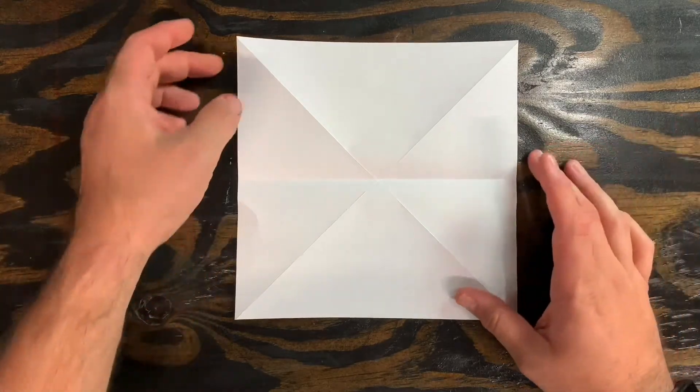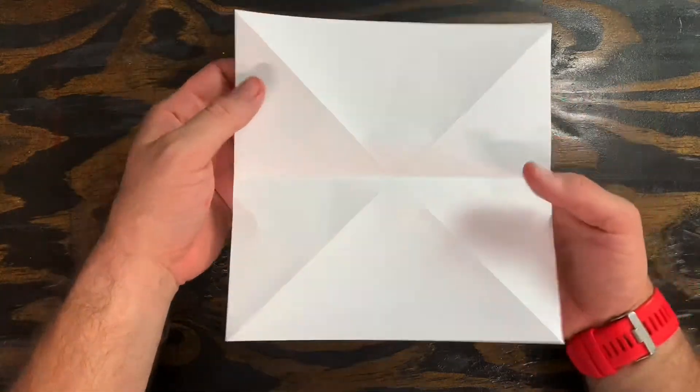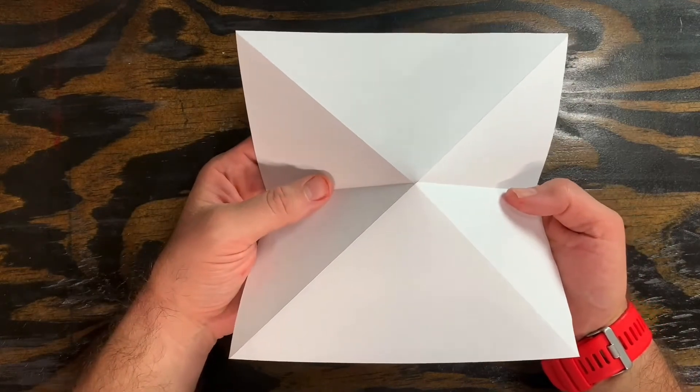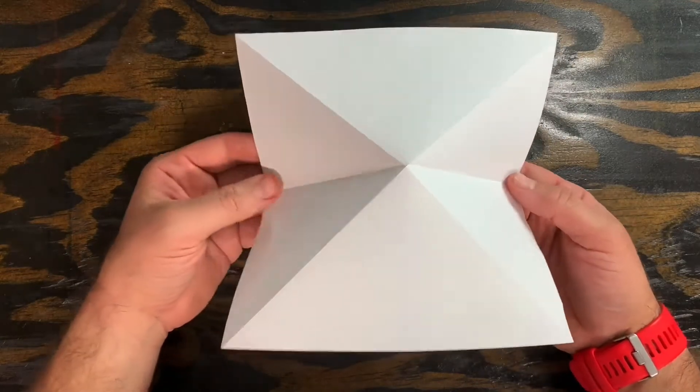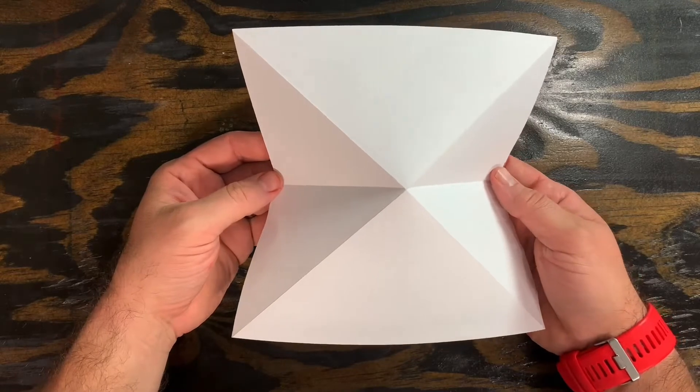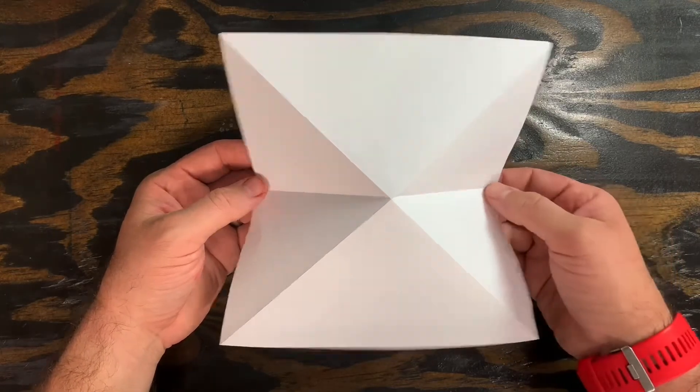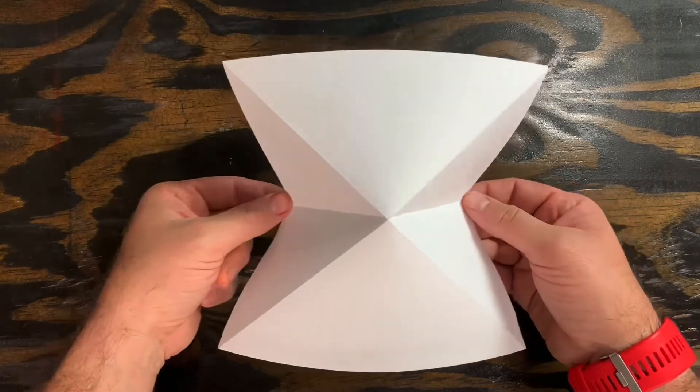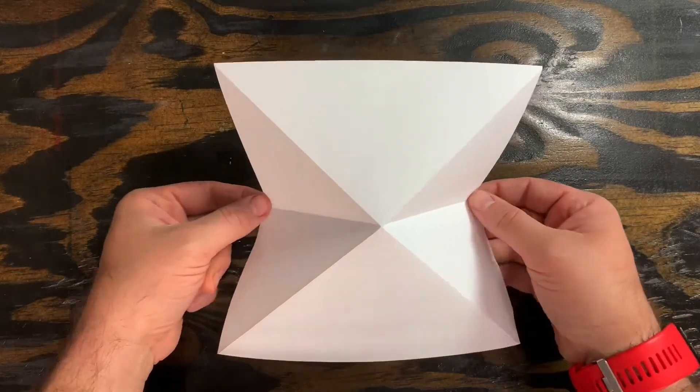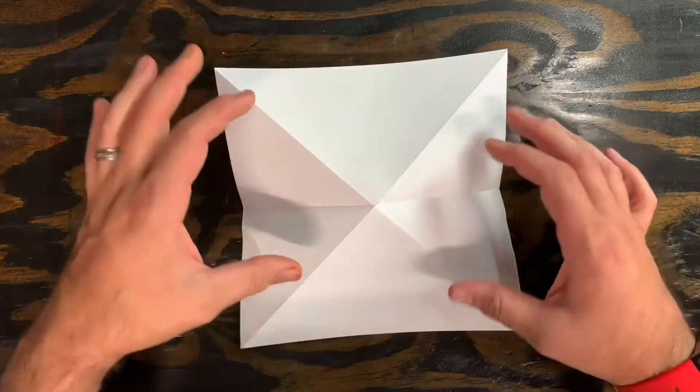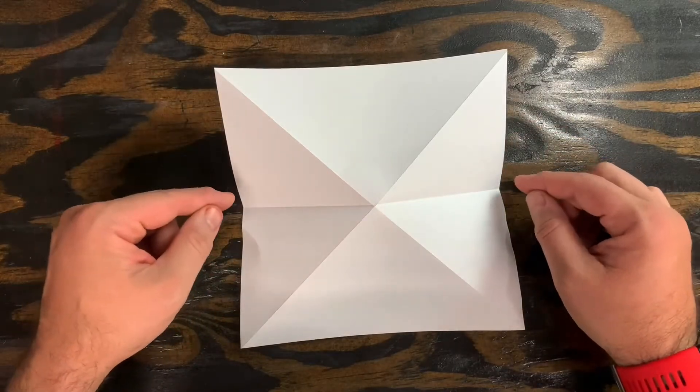And when you open it back up now we have a line right through the middle of the X. Now this is the tricky part. So first I'm going to pop the point in the center up. So you can see it sort of looks a little bit like a pyramid. But you can also see that these two sides are starting to go into the center. So those first few folds prepare the paper for this.